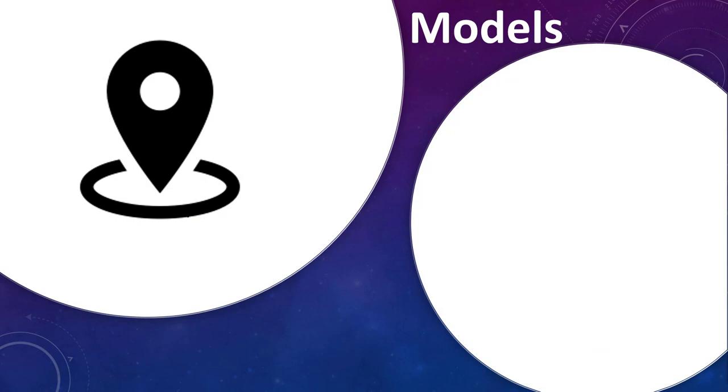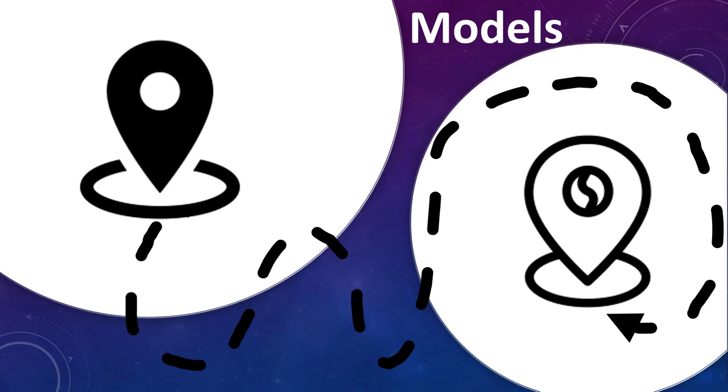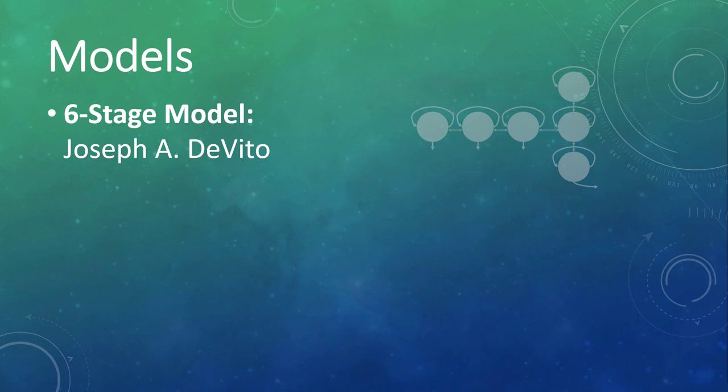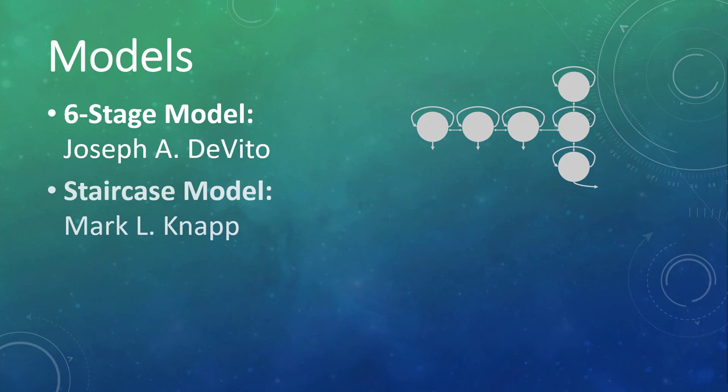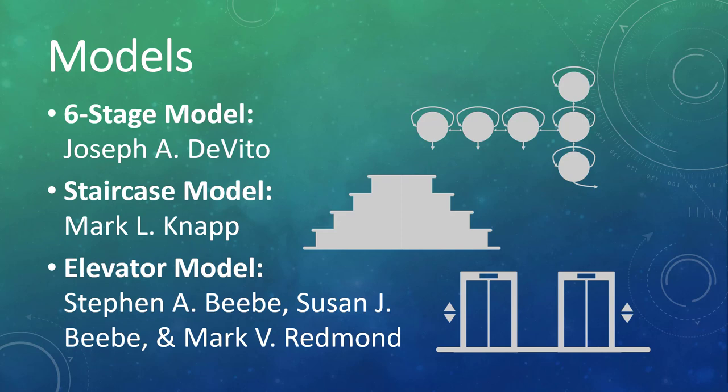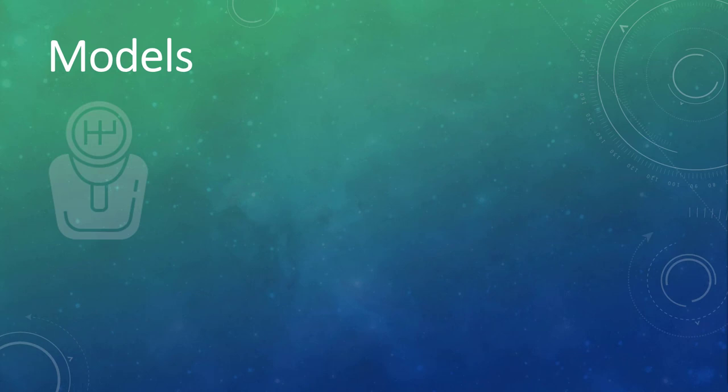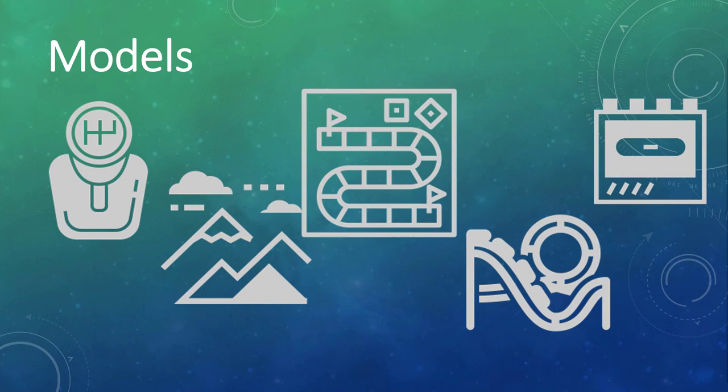Let's start our discussion with some of the models used to describe how relationships go from beginning to end and everywhere in between. You'll see the models displayed in various forms. Joseph DeVito's six-stage model uses the circles and connectors common to molecular models. You will also see a staircase, as Mark Knapp's metaphor, and elevators are used by Beebe, Beebe, and Redmond as the carrying vehicle for their model. Some students design models using a car's stick shift, mountains, game boards, roller coasters, and so on.